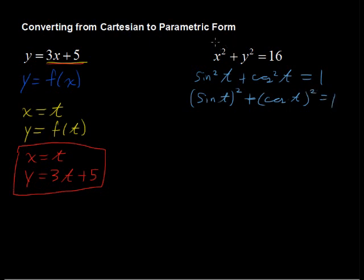Now we want to make this equation look like what we have here. Sine of t quantity squared plus cosine of t quantity squared equals 1. So I'm going to divide each side by 16.